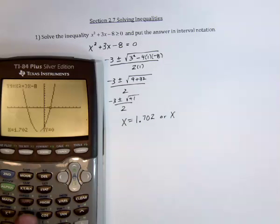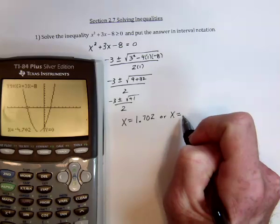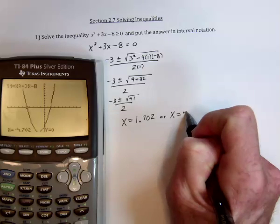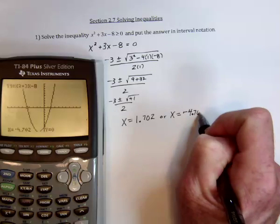Likewise, the other one would be negative 3 minus the square root of 41, which is divided by 2. That should be this one over here. Very good. So x is equal to a negative 4.702.